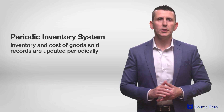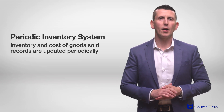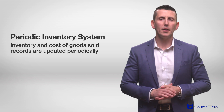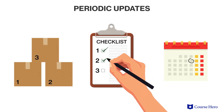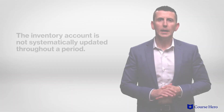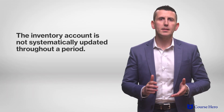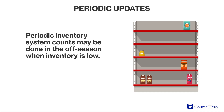In a periodic inventory system, the records — both inventory and cost of goods sold — are updated periodically. This could be daily, weekly, monthly, or however often is wanted. The inventory account is not systematically updated at each sale. With the periodic inventory system, the count may be done when merchandise inventory is low, perhaps during the off season when there is less to count.